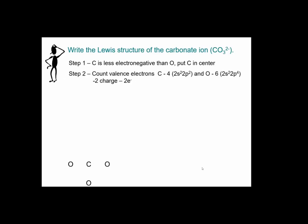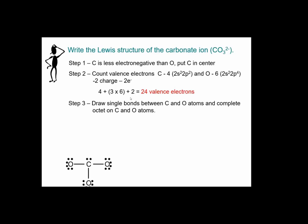And then we count the total number of valence electrons. Four coming from carbon. Three oxygens each bringing six. Two negative charges. We add two for two negative charges. And total 24 electrons. Then we connect the atoms together by single bond. And we try to complete the octet. And we counted number of electrons. Carbon has 8 electrons. Oxygen has 8 electrons. This oxygen has 8 electrons. This oxygen has 8 electrons.